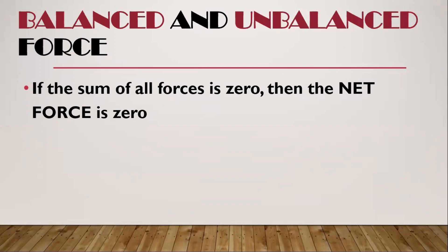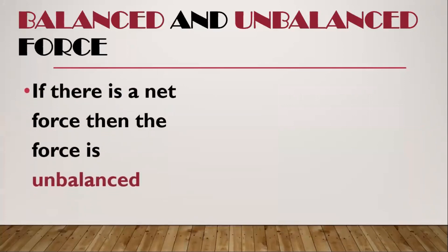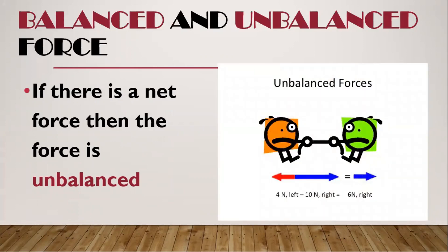If the sum of all forces is zero, then the net force is zero — that is a balanced force. Look at the picture here: both fingers are pushing the car in opposite directions with the same force, so the car will not move and stays still, because both fingers are exerting equal forces. If there is a net force, we call it an unbalanced force. Look at the picture — the red arrow exerts 4 newtons going to the left.